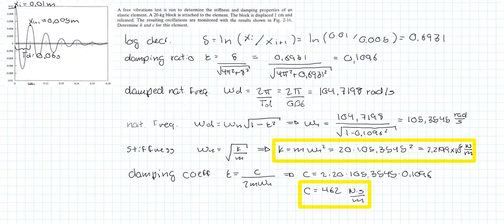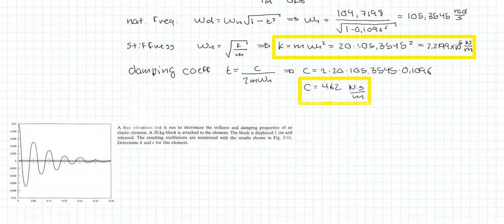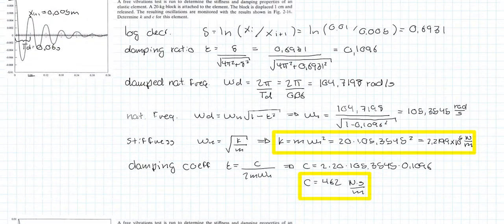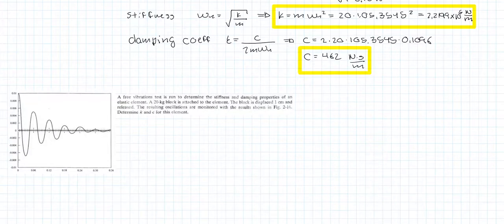Hello everyone, this is the second part of our logarithmic decrement example. We're going to solve the same problem as we did in the previous video, but we're going to use a different method. Remember that last time the first step was to calculate the logarithmic decrement and then we found the damping ratio. In this new method we're going to start off the same way, but the way that we're going to find the natural frequency is a little bit different.